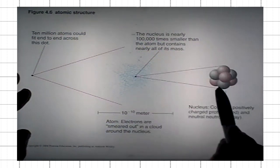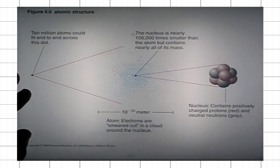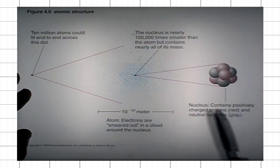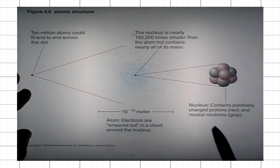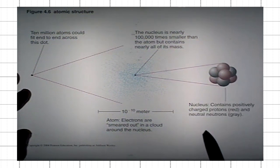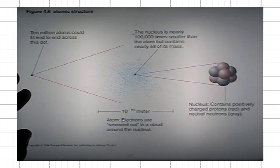An atom consists of a nucleus. If I blow up the central part, I would get an atomic nucleus, which consists of two types of particles: positively charged protons, indicated by red here, and neutral particles — those that do not carry any electric charge, neither positive nor negative — and they're called neutrons.